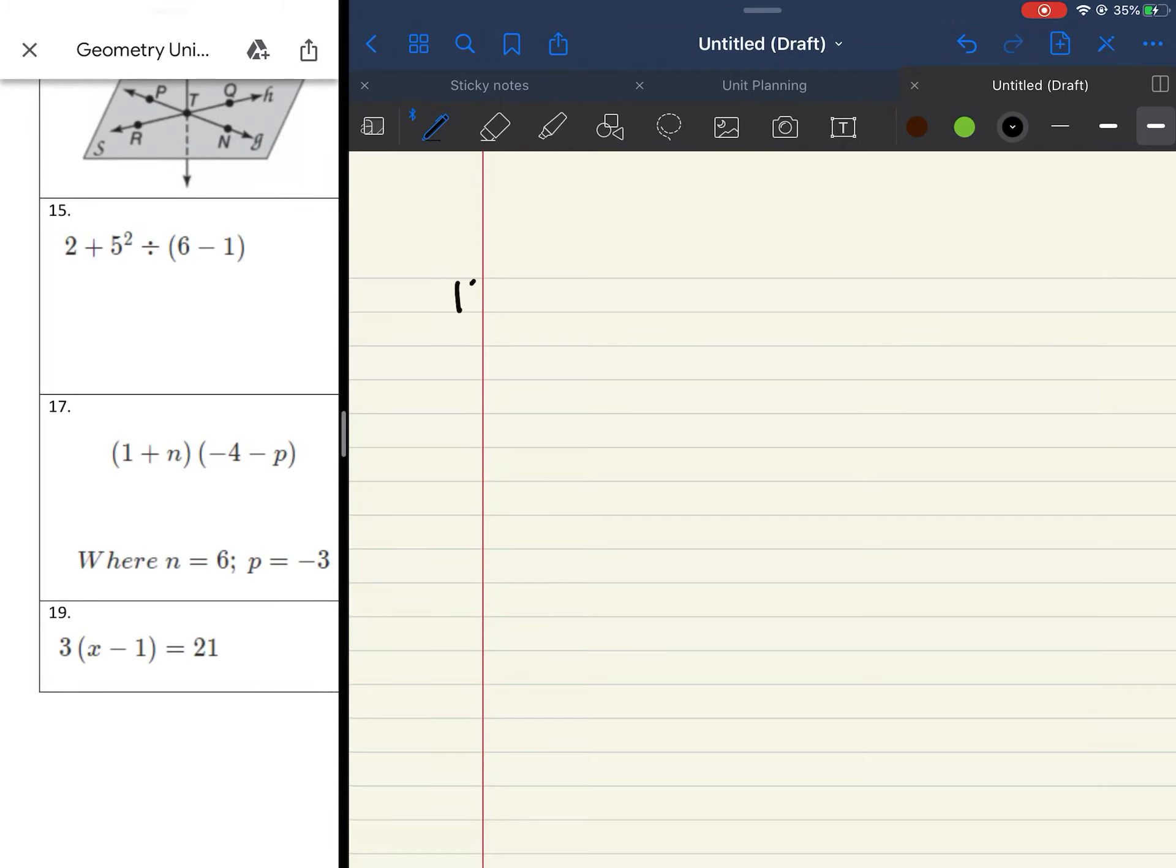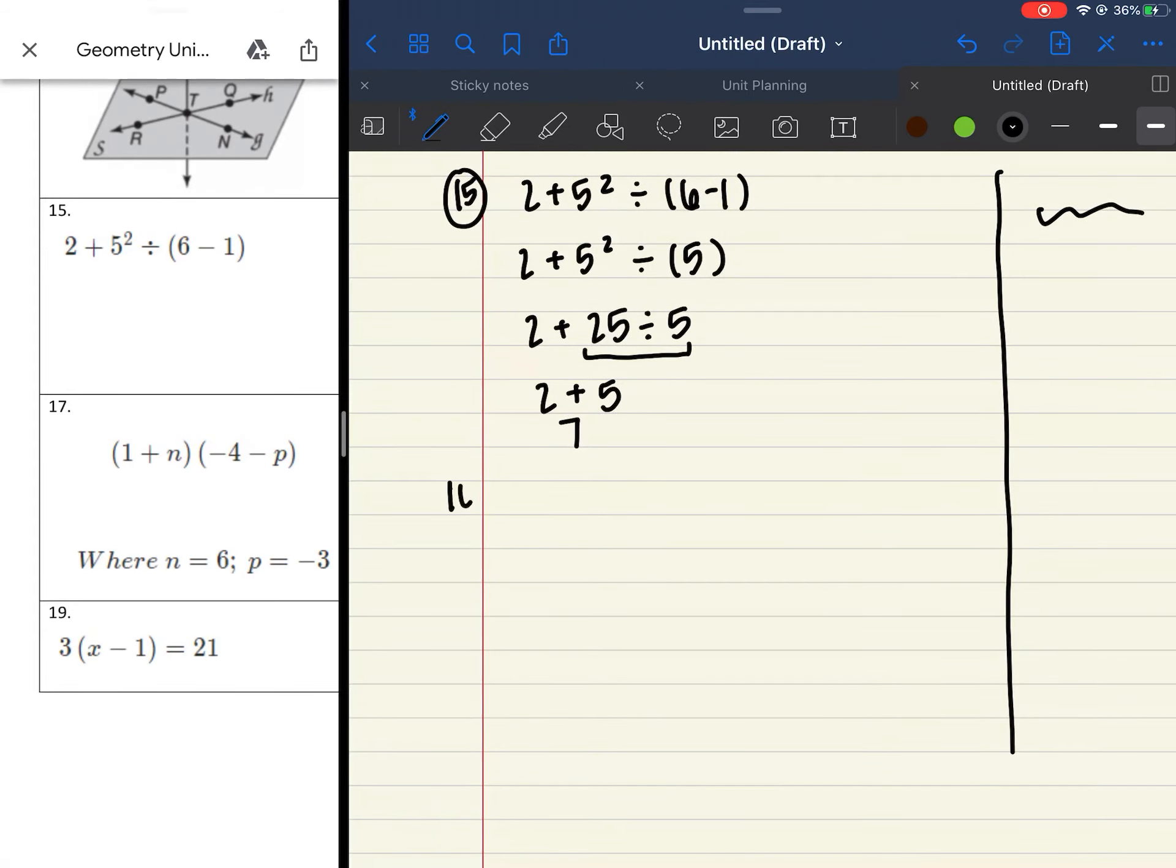So now 15, we're back into some of the expressions. You have 2 plus 5 squared divided by 6 minus 1. So we're going to do our parentheses first. You do 6 minus 1 to get you 5. Our next one is the exponent, so 5 squared should give you 25. If we check for any multiplication and division, we do have this 1. So 2 plus 25 divided by 5 gives you 5. And your last step is to do 2 plus 5 to get 7. So on the right side, you'll write maybe where you think you went wrong if you missed a step, something like that.